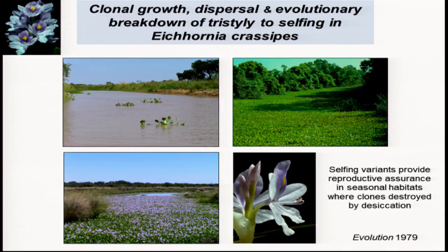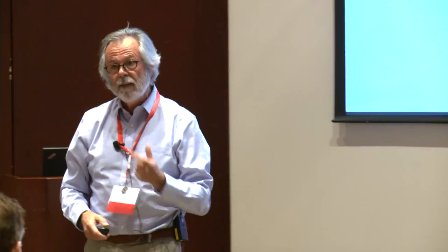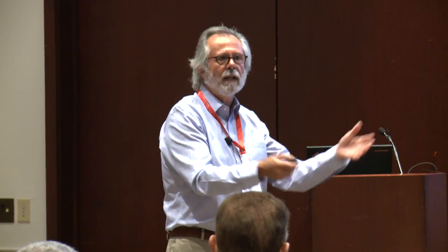What happens — and this doesn't occur in introduced populations because there aren't the water level fluctuations of the native Amazon and Pantanal — is that when the water level goes down, everything starts flowering. Since this plant has been dispersed to various parts of the world, in some seasonal environments where there's only one clone and desiccation occurs, particularly if pollinators aren't common, there is very strong selection for reproductive assurance through the evolution of selfing. Our work on Eichhornia crassipes has demonstrated that mating system modifier genes are selected in these monomorphic populations in seasonal environments, leading to a change from outcrossing in the native range to selfing in introduced populations with a single morph.